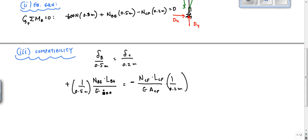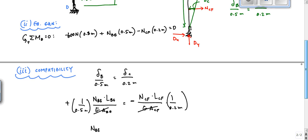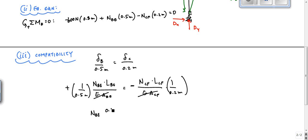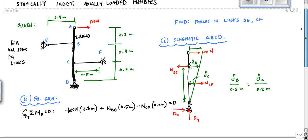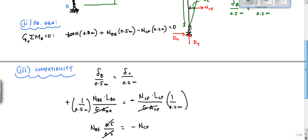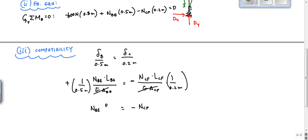So now, then, our relationship is going to be, we would get that NBE times LBE. What was LBE? That was 0.5 meters. 0.5 over 0.5 is equal to minus NCF times LCF. What was LCF? LCF was 0.5. 0.4 over 0.5 times 0.5 over 0.2. And then, they don't cancel out. What's wrong with me?